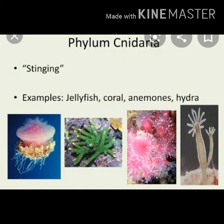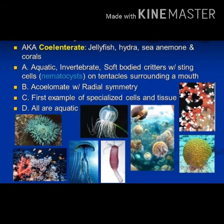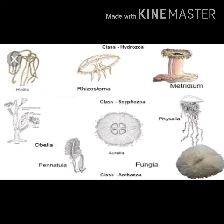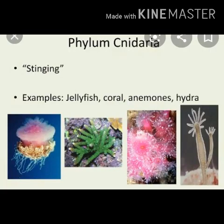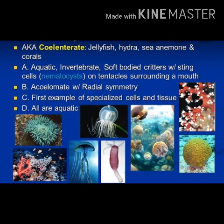Cnidarians are found in water, mostly in the sea, with very few in fresh water. Corals develop a hard skeleton made up of calcium carbonate from their secretions, but these are not bones. Examples of cnidarians include jellyfish, sea anemone, and red coral.